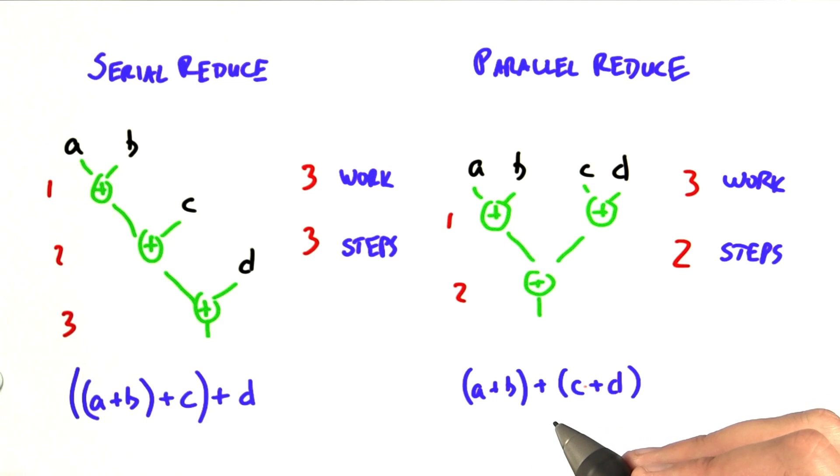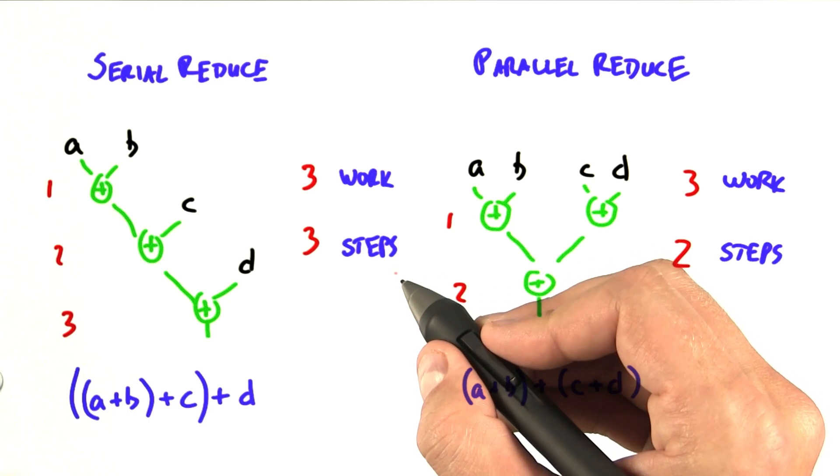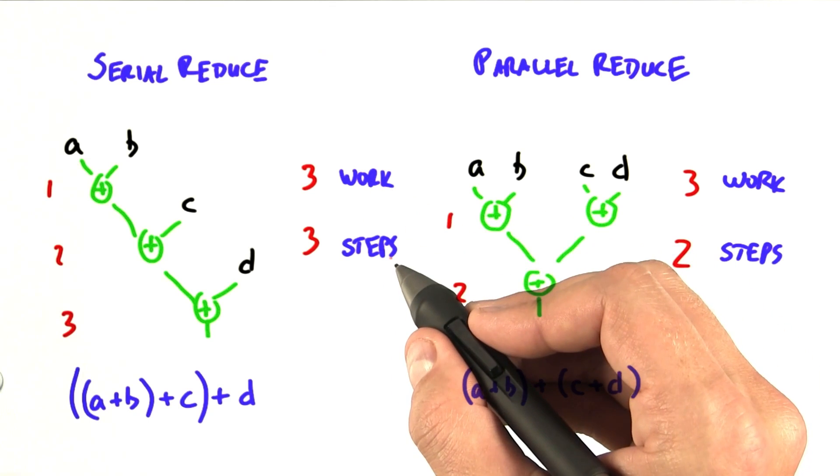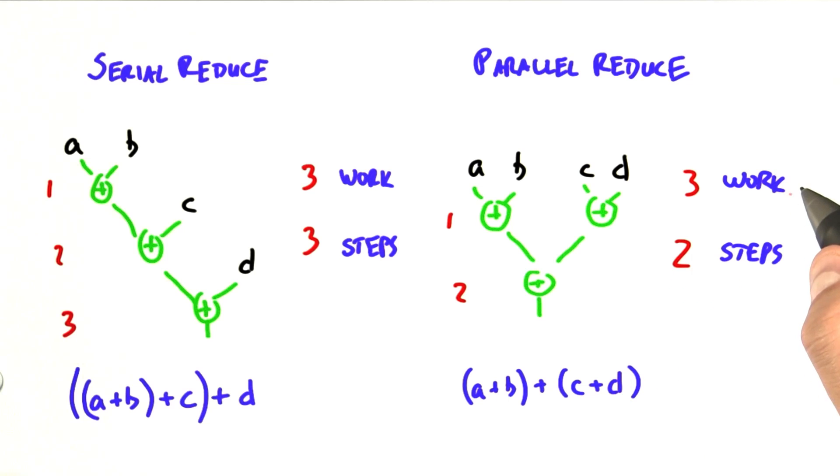So three of them are pretty straightforward. The serial implementation here has both order of n, linear work, and linear steps. And the parallel reduction also has linear work, so it's also O of n. But this one's a little bit more complicated to compute. So let's dive in and take a look at this.